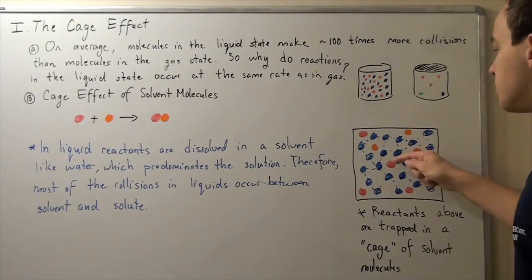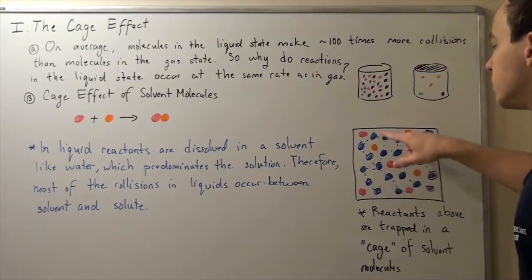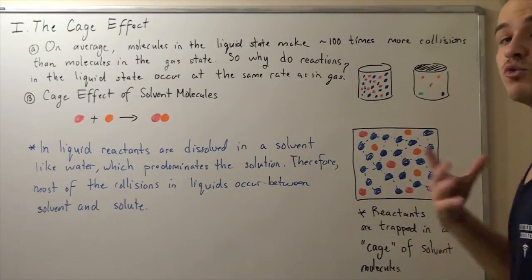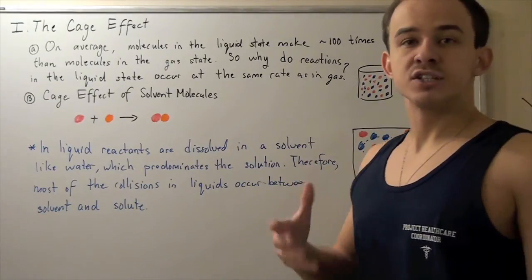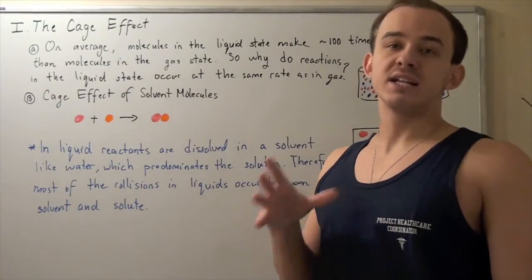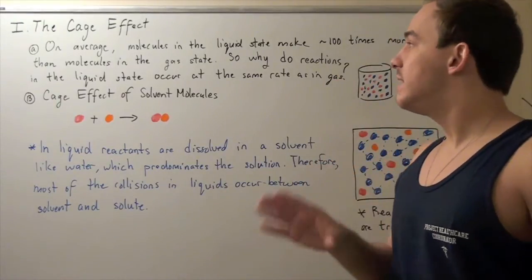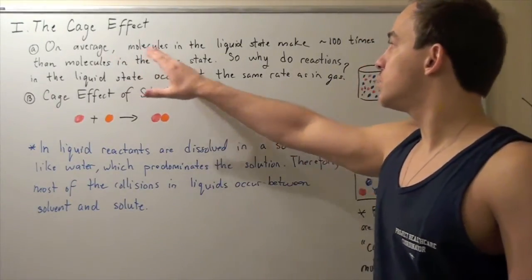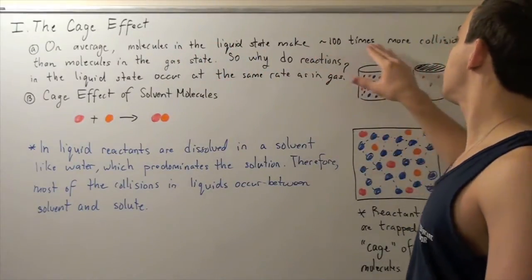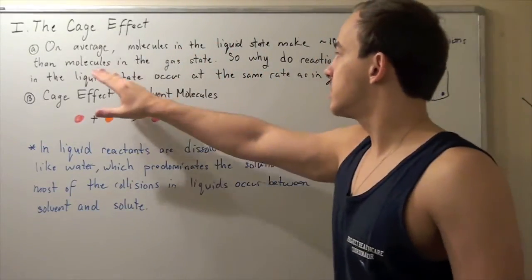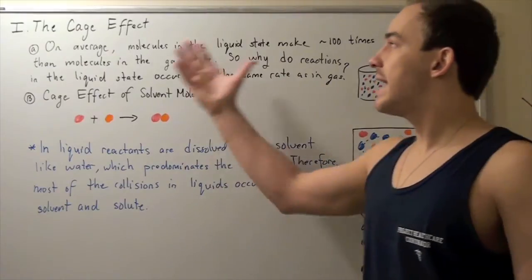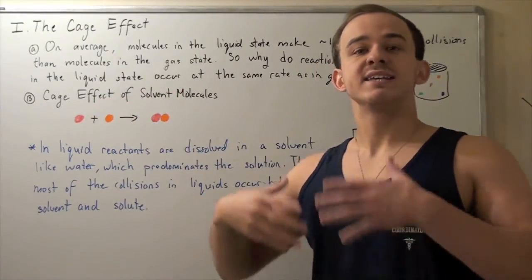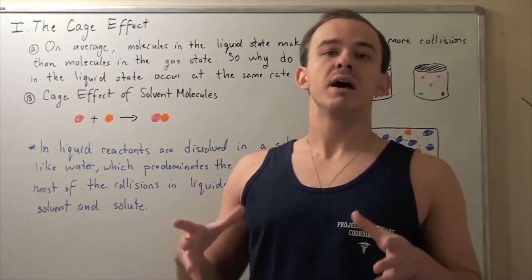But otherwise, if it jumps into another cage that doesn't have another reactive molecule, it will continue bouncing. And this greatly slows down our reaction in liquid and aqueous states. And that's exactly why, even though on average molecules in a liquid state make 100 times more collisions than molecules in a gas state, because of this cage effect, the rates in a gas state and liquid state are about the same.